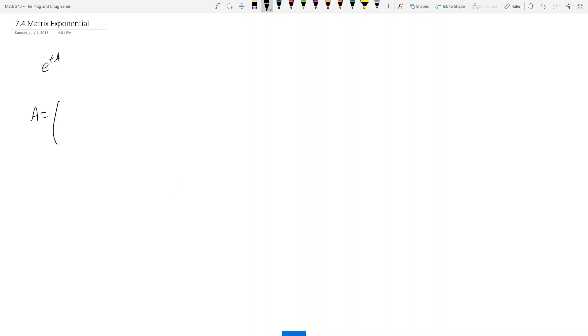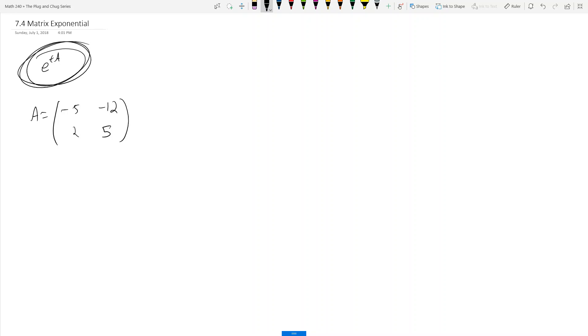So let's say I'm given a matrix A and we're just going to do a 2 by 2 to make this video a little shorter. Let's say I have A equals (-5, -12; 1, 5). So I need to find this guy, e to the tA.